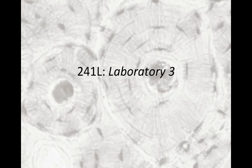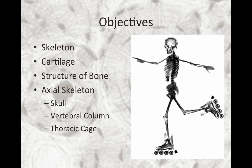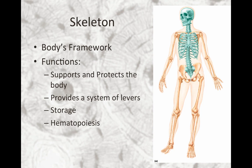Welcome to the pre-lab content for 241 Lab, Laboratory 3. Today we'll be diving into my favorite organ system in the body, the skeleton. We'll also talk about cartilage, the structure of bone, and the axial skeleton in particular, where we'll talk about the skull, the vertebral column, and the thoracic cage.